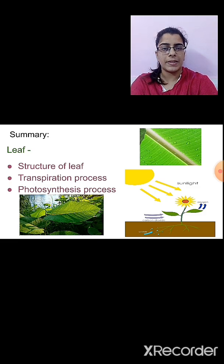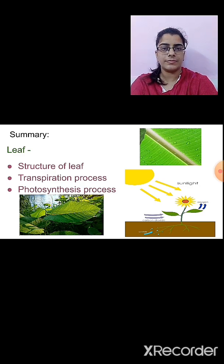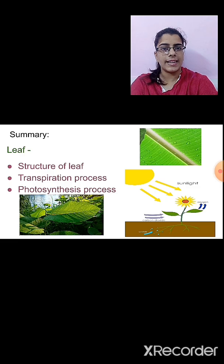Then we studied about the transpiration process. Sometimes water comes out of the leaf in the form of water vapour — this process is known as transpiration. We also studied about photosynthesis: the process in which leaves prepare their own food in the presence of sunlight and a green-colored pigment known as chlorophyll. In this process, leaves use water and carbon dioxide, while oxygen is released.